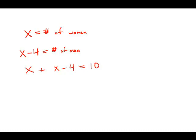So a little bit of algebra here. 2X minus 4 equals 10. I'm going to add 4 to both sides. 2X equals 14 and X equals 7.